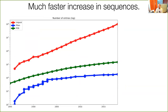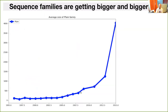Even beyond the exponential difference in scale, there is something interesting: if you group proteins into families — like in the Pfam database — that number is not increasing exponentially; it's basically flat or has a very slow increase. That means for each family we now have many more sequences. The average size of each family has exploded — today you have many families with tens or even hundreds of thousands of sequences.